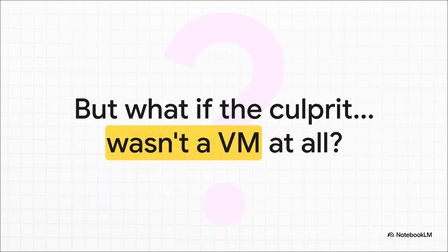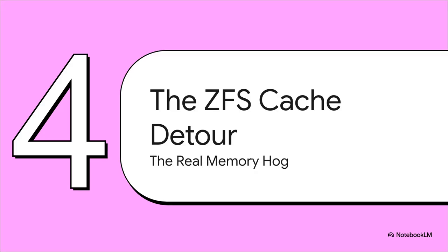Just as this big philosophical debate was heating up, the entire premise of the original problem got turned completely on its head. The script he wrote revealed something that sent the conversation in a completely new direction. The memory hog? It wasn't a virtual machine. It turns out the high memory usage wasn't a problem at all — it was a feature. The real culprit was the ZFS cache, just doing its job exactly as intended.